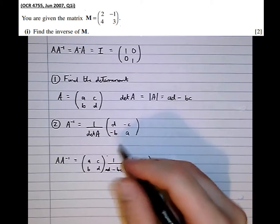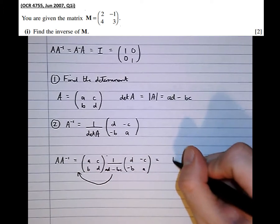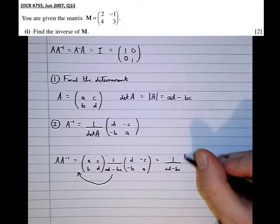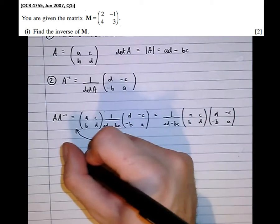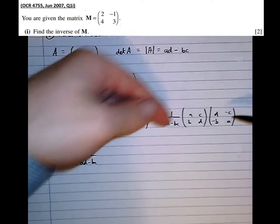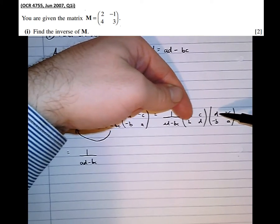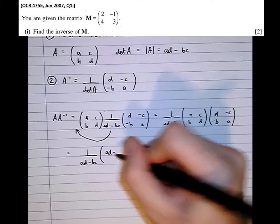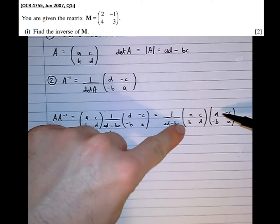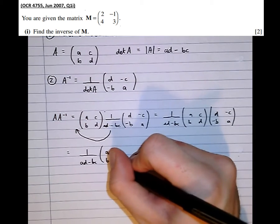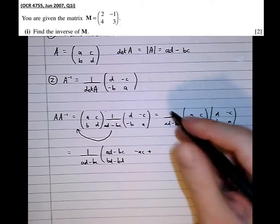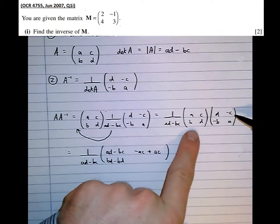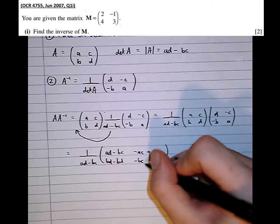Now because this quantity 1 over (AD minus BC) is just a number, we can take it out to the front. Then multiplying the matrices together, the entries are: AD minus BC for the top-left, BD minus BD for the top-right, minus AC plus CA for the bottom-left, and minus BC plus DA for the bottom-right.